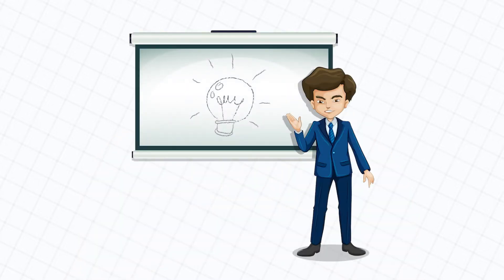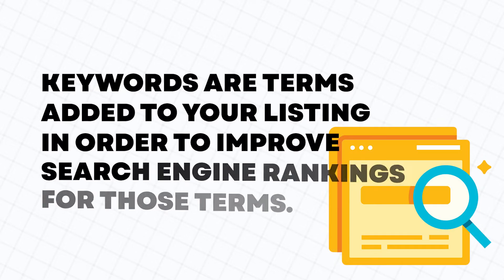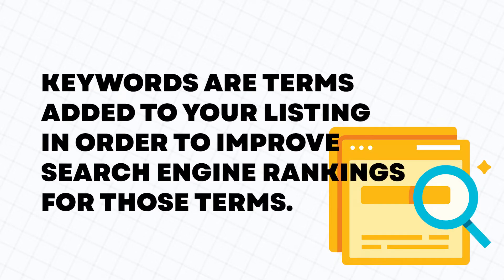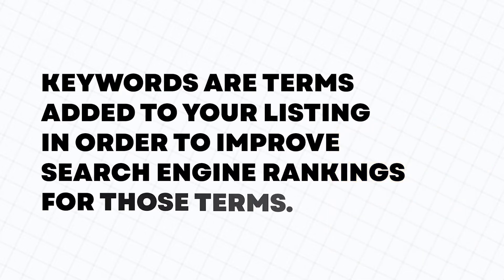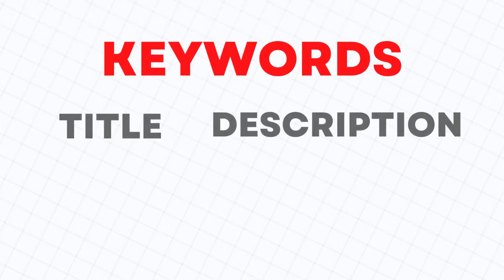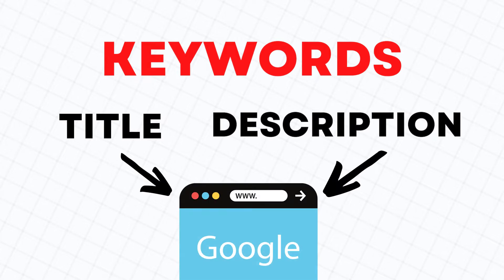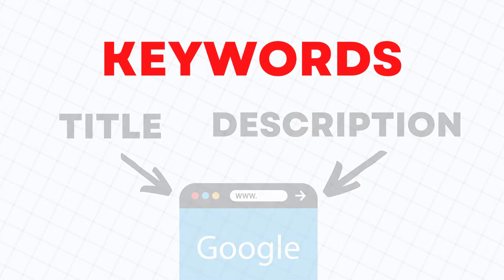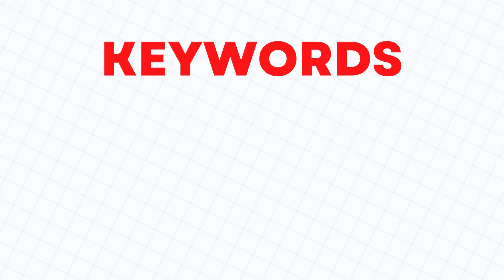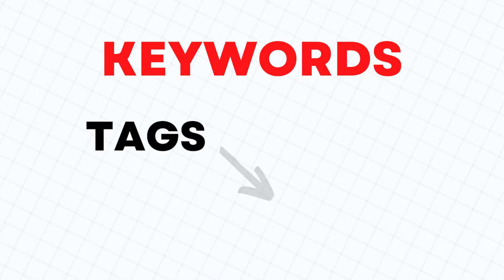To begin with, let me explain a few important things. Keywords, also known as keyphrases, are terms added to your design listing in order to improve search engine rankings for those terms. Keywords you use in the title and description of your Redbubble design are indexed by Google and can be found on the Google search engine results page. On the other hand, keywords you use in the tags section are ranking only on the Redbubble search page.